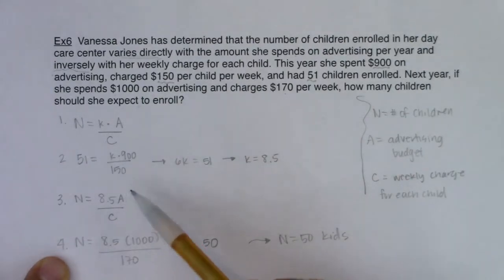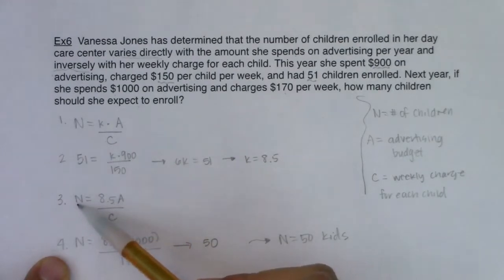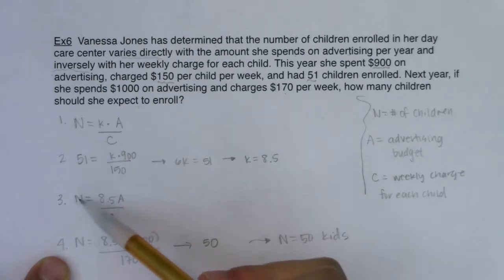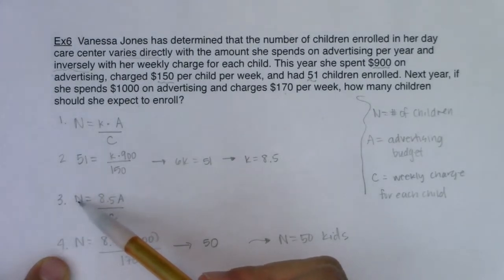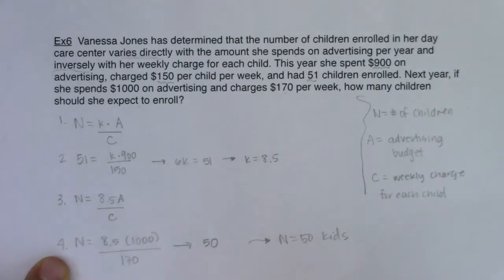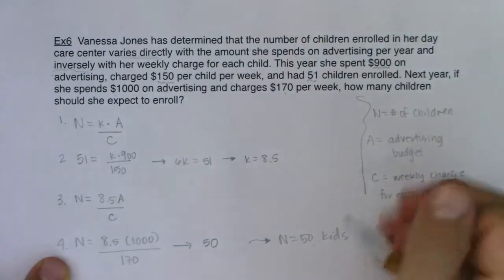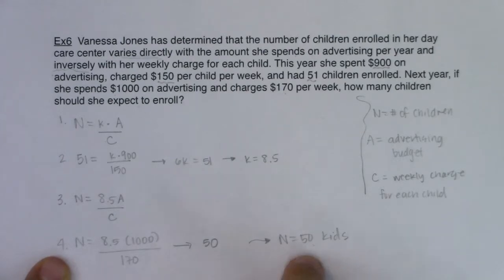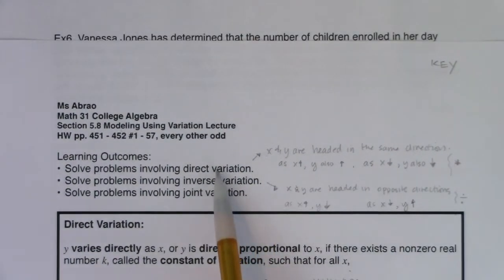Vanessa realizes that if she spends more on advertising, the number of kids goes up — that's the direct variation. But if she charges more per kid, the number of kids goes down — that's the inverse variation. So advertising gives her more kids, and charging more per kid results in fewer kids. With a $1,000 advertising budget and raising the charge from $150 to $170, she goes from 51 kids down to 50 kids.